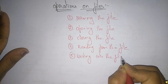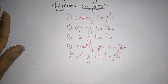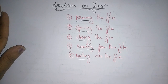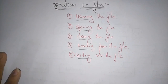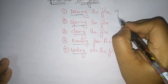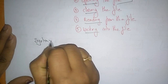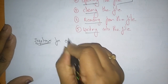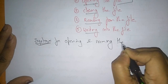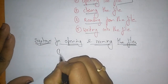These are the different operations that are performed on files — naming, opening, closing, reading from, and writing into the file. Now let us see the syntaxes for opening and naming the files.